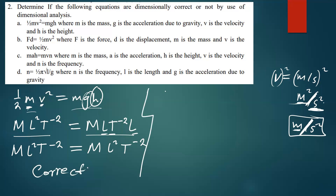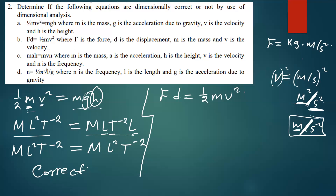For the second equation, Fd = ½mv². For force, the dimensions come from F = ma, which gives kg·m/s², so the dimensions are MLT⁻². The distance d also has dimension L.